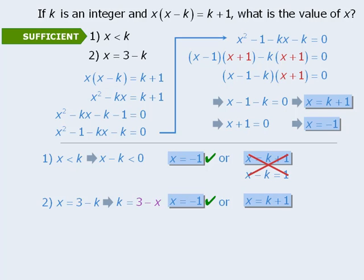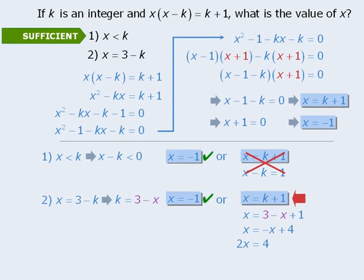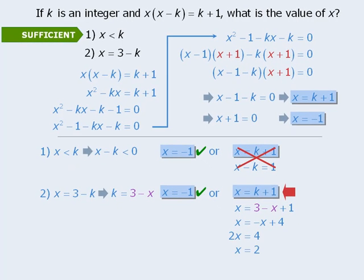Now that we have an equivalent expression for k, we can take the second possible value of x here, and replace k with 3 minus x. To solve this for x, we will simplify the right-hand side, then we'll add x to both sides, and then we'll divide both sides by 2 to get x equals 2.